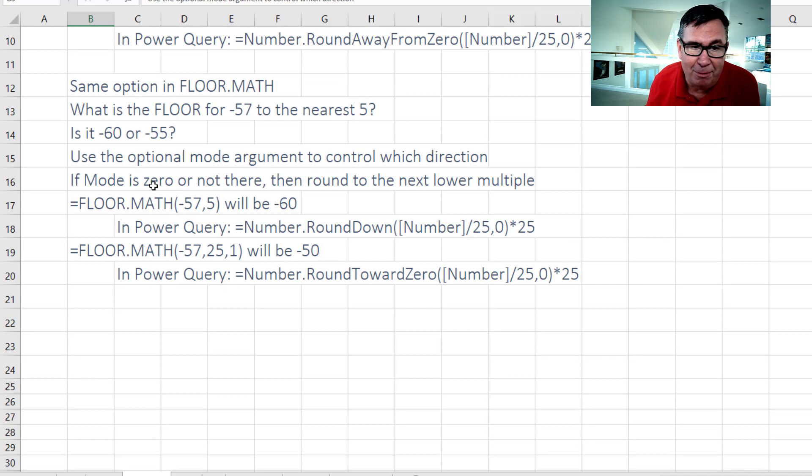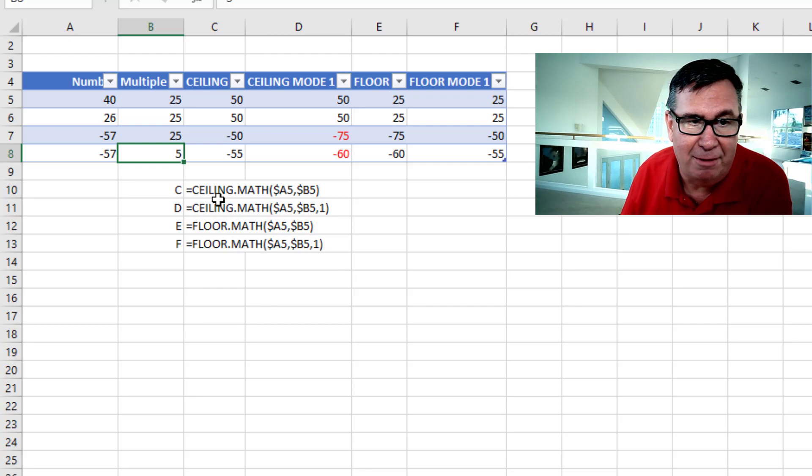Same thing with floor.Math. You can control whether it goes down or up depending on whether you use the mode. So here's the four functions that we have in Excel.